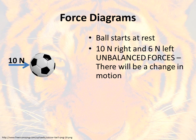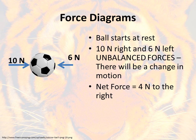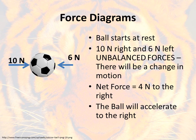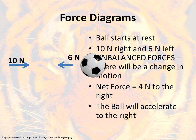Another example: a ball starts at rest and then two students go after the ball. One student kicks the ball with ten newtons to the right, and the student on the other side also kicks it but with six newtons to the left. In this example the forces are unbalanced — they don't match, they do not cancel each other out. If we take ten and subtract six to find the difference, that gives us our net force of four newtons to the right. So we expect this ball to accelerate to the right. With an unbalanced force you will have acceleration — some change in motion — and that direction should go in the direction of the greater force.